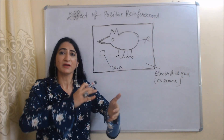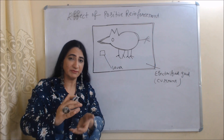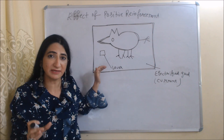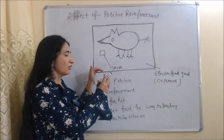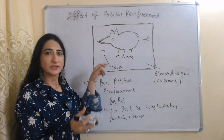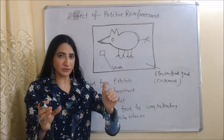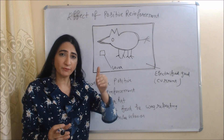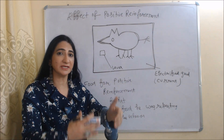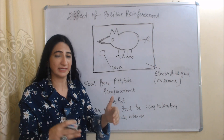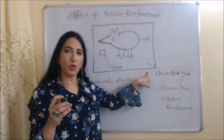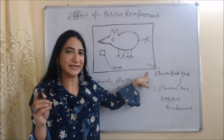After repeating this process many times, the rat realized there is some connection between the food and the lever. Whenever he pressed the lever, he got food, so finally he learned to press the lever in order to get food. Now whenever the rat feels hungry, he presses the lever and gets food. So food is a positive reinforcement for the rat — because of food he was pressing the lever again and again, repeating a particular behavior. This is learning through reward.